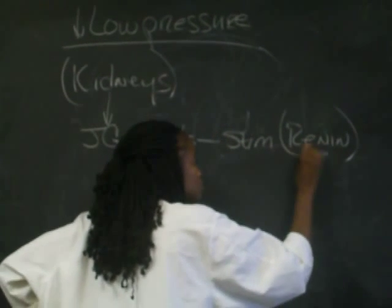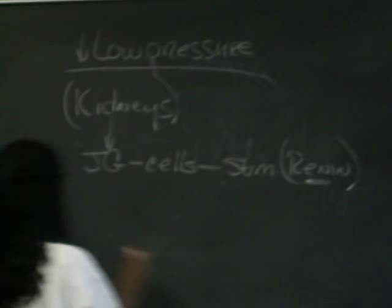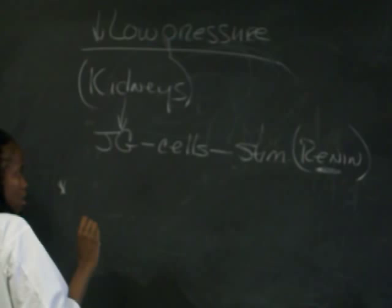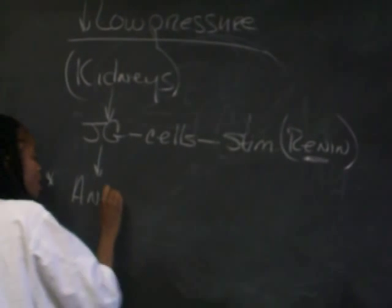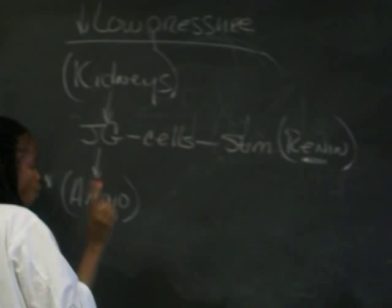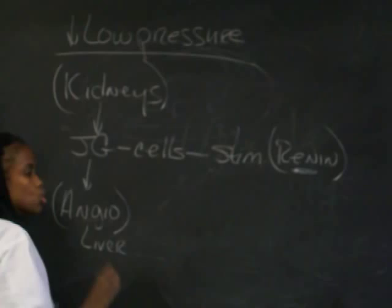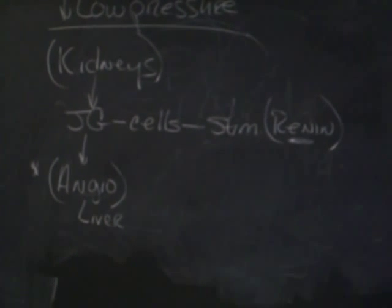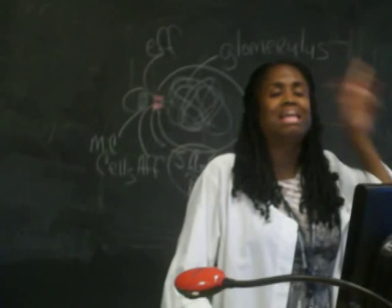Now this is some powerful stuff. We know that this stuff will then do what? That renin is going to circulate throughout my body and it has a substance that it can act on that is released by your liver called angiotensinogen. Now that's a long little word, but it is a substance that is produced in the liver. So it's already present in your body. It's inactive.